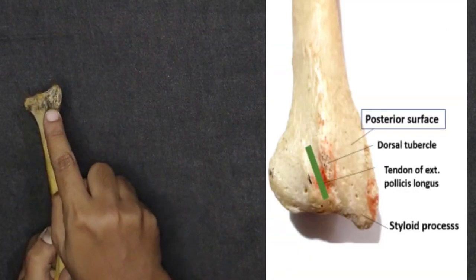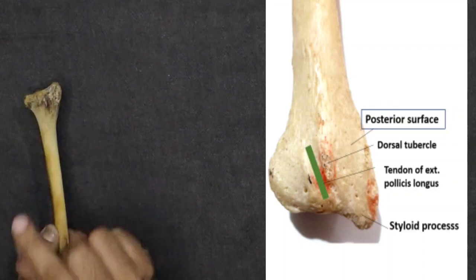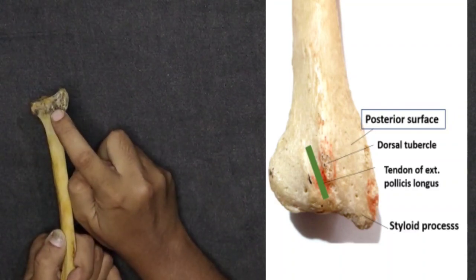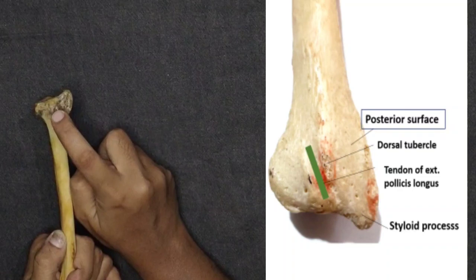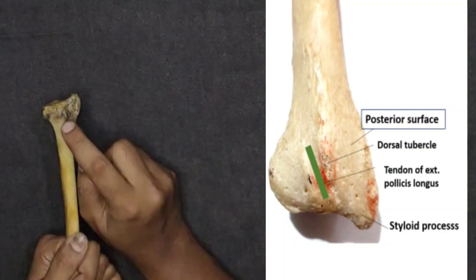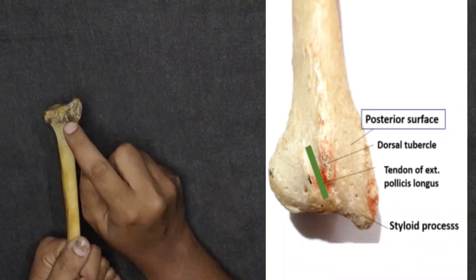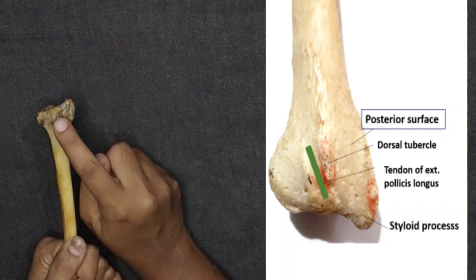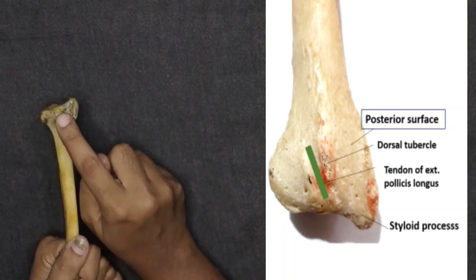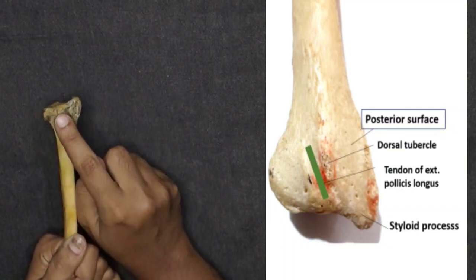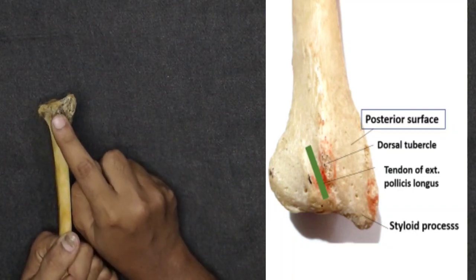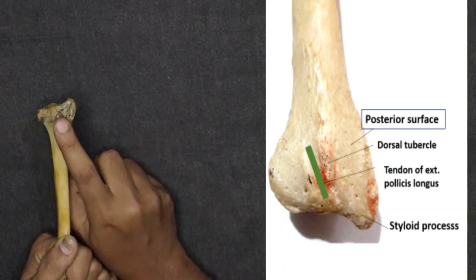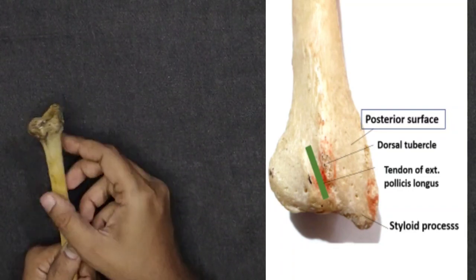On the posterior surface, there is a tubercle — a small rounded projection. This projection on the dorsal (back) side is called the dorsal tubercle of Lister.